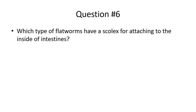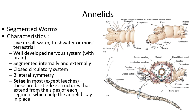Next, segmented worms, also known as annelids. The parasitic worms we just talked about look segmented but that's generally not a characteristic of flatworms — all annelids are segmented. Some live in freshwater or terrestrial environments like earthworms, but marine ones don't look like earthworms. They have a well-developed nervous system, external and internal segments, and a closed circulatory system. Their repeating units have setae, which are bristle-like structures extending from the sides.